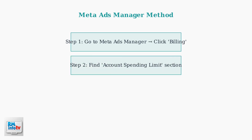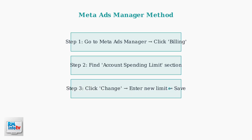You'll find the Billing section in the main menu or Account Settings area. Look for the Account Spending Limit area, which shows your current spending limit and provides options to modify it. Click the Change button next to your current limit, enter your new desired spending limit, and confirm the change.